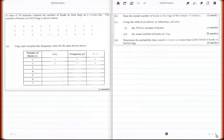The question says a class of 30 students counted the number of books in their bags on a certain day. The number of books in each bag is shown below. So here you have a set of data, and below you have to copy and complete the frequency table for the data shown above. They were gracious enough to fill in some of the values for you.